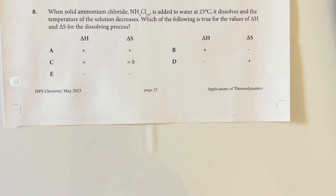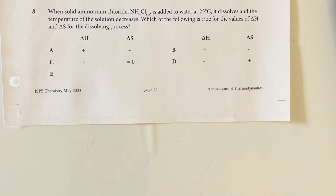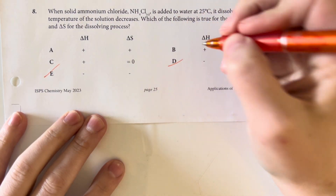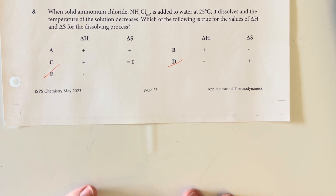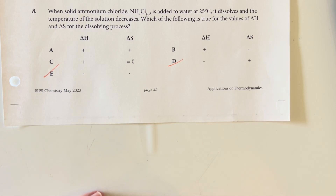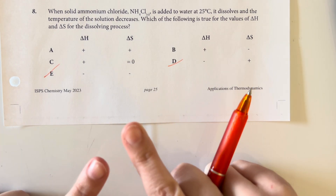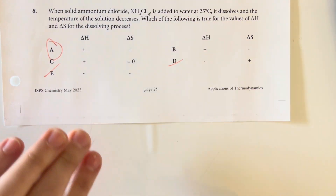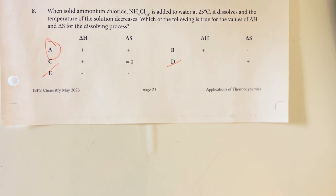When solid ammonium chloride is added to water at 25 degrees Celsius, it dissolves and the temperature of the solution decreases. What are the values of delta H and delta S for this dissolving process? Since the temperature decreases, this is an endothermic process, so delta H is positive — we can eliminate any answer stating delta H is negative. Delta S is also positive because we are increasing disorder by going from a single solid molecule to two ions in solution. Answer choice A is correct.